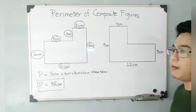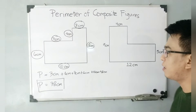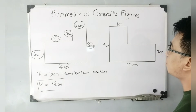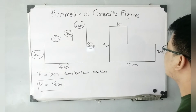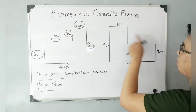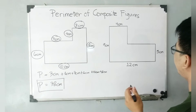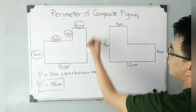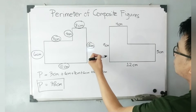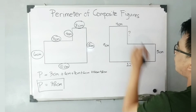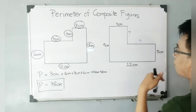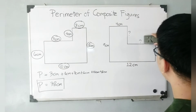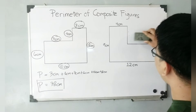Let's move on with the next one. We have this composite figure and as you can see, we are missing some parts of it that we need to find before we can calculate the perimeter. Don't worry, all you need to do is figure out what the missing measurements are. This side is nine centimeters, so we need to know what is the measurement of this side.